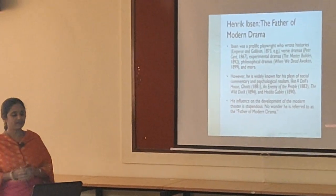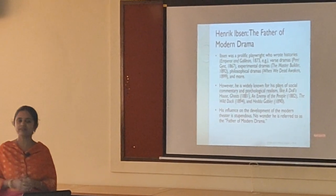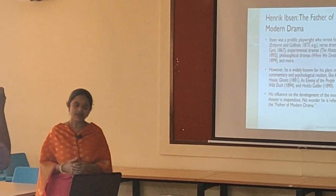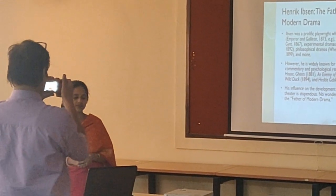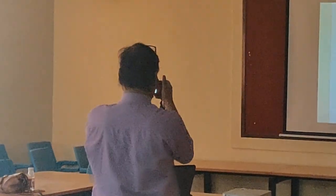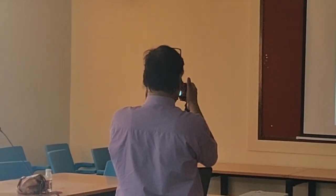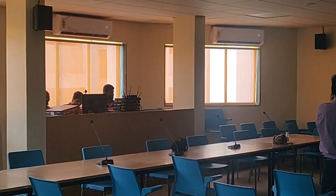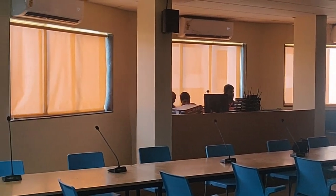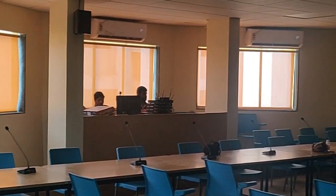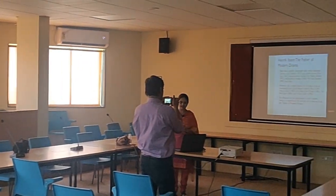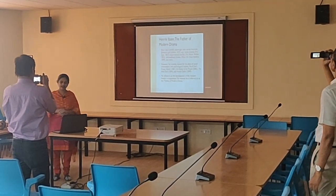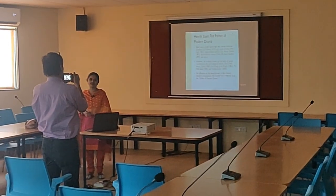Ibsen was a prolific playwright who wrote histories like Emperor and Galilean in 1873, verse dramas like Peer Gynt in 1867, experimental plays like The Master Builder published in 1892, and philosophical plays like When We Dead Awaken, and many more. However, he is widely known for his plays with social commentary, as he is basically a realistic playwright and considered the father of realism. His influence on the development of modern drama is stupendous, which is why he is referred to as the father of modern drama.